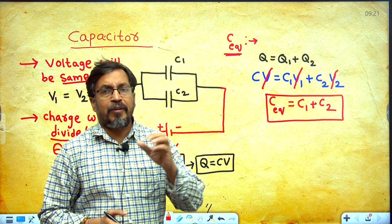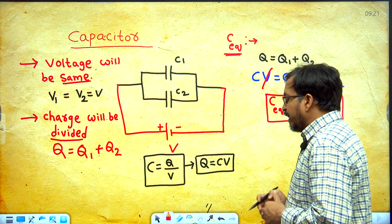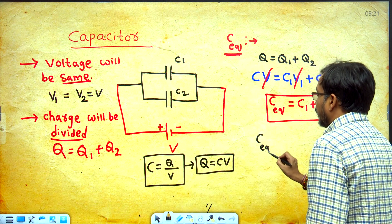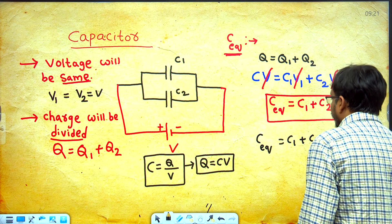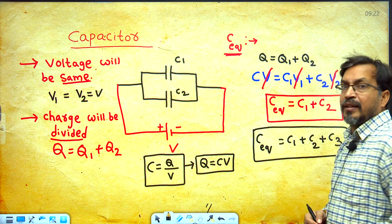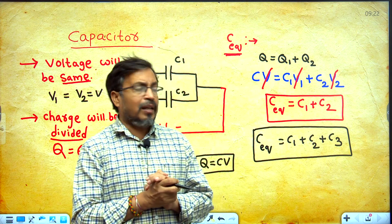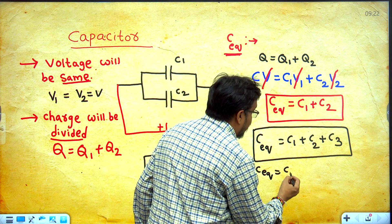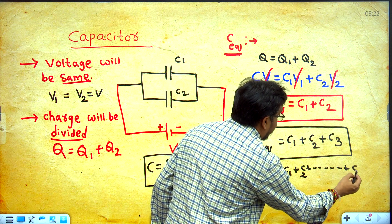When two capacitors are in parallel, C equivalent equal to C1 plus C2. When three capacitors are in parallel, C equivalent equal to C1 plus C2 plus C3. When N capacitors are in parallel, C equivalent equal to C1 plus C2 plus ... plus Cn.